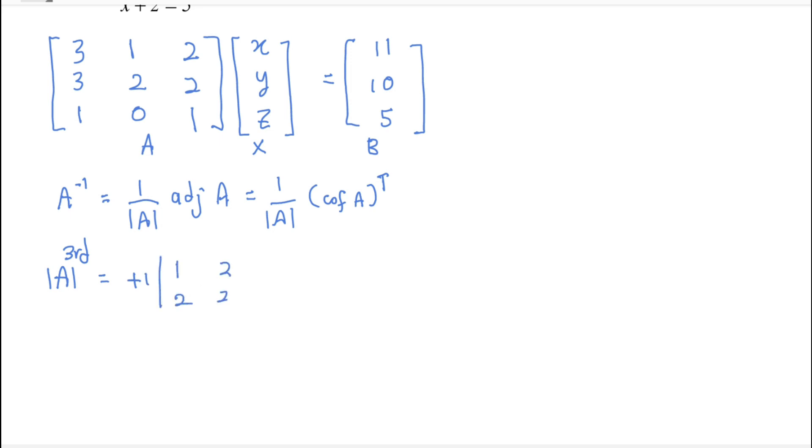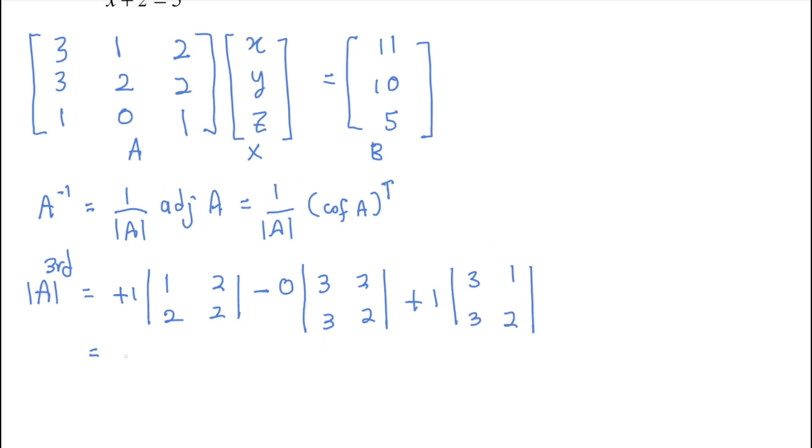Three two, three two, and then plus one, three one, three two. Then you proceed with one, two minus four, minus zero, six minus six which is zero also.